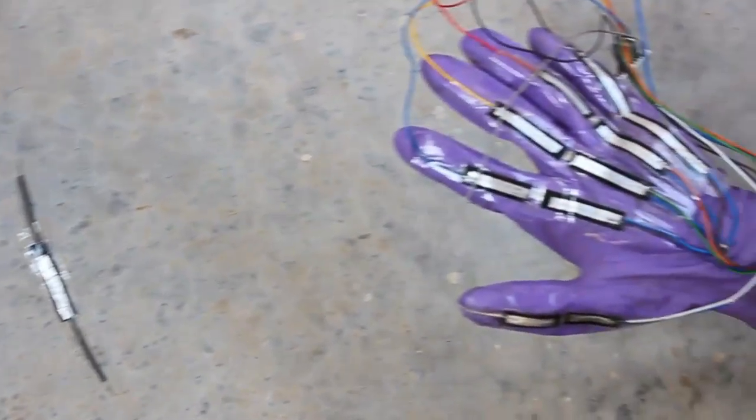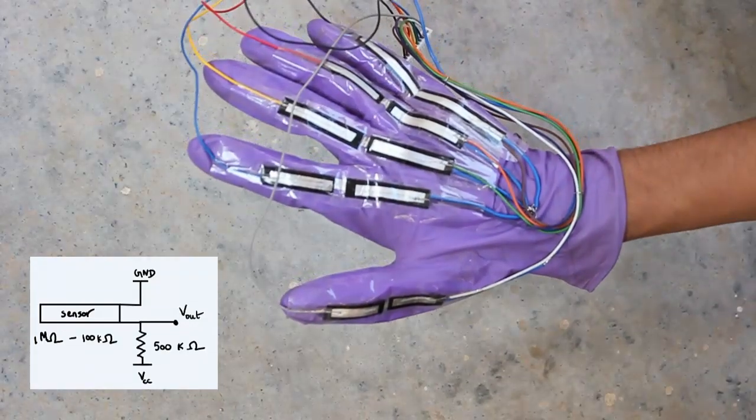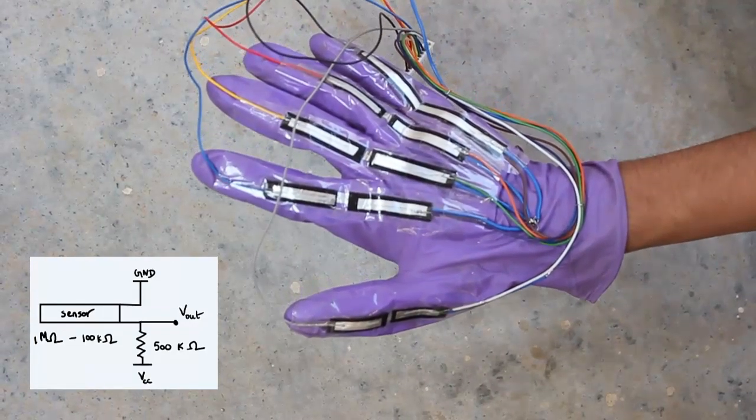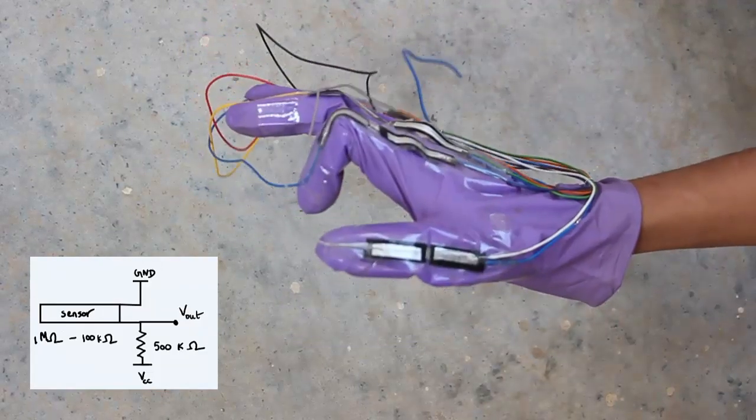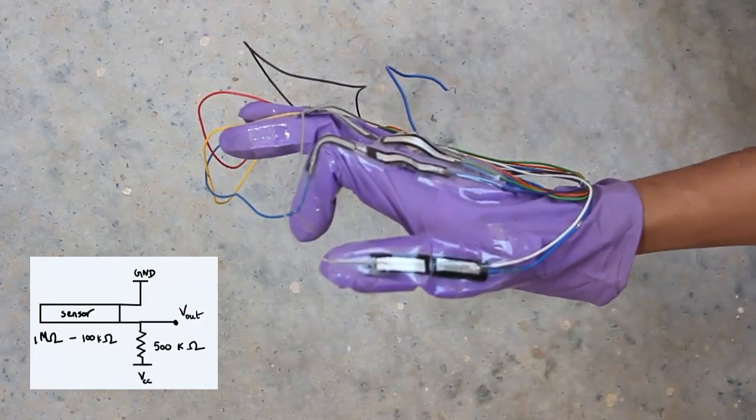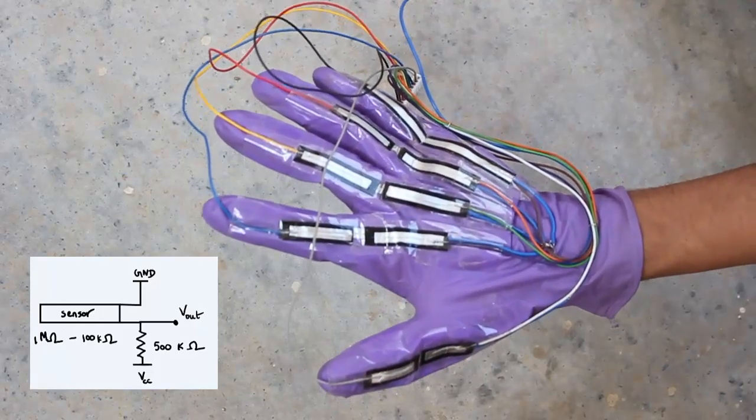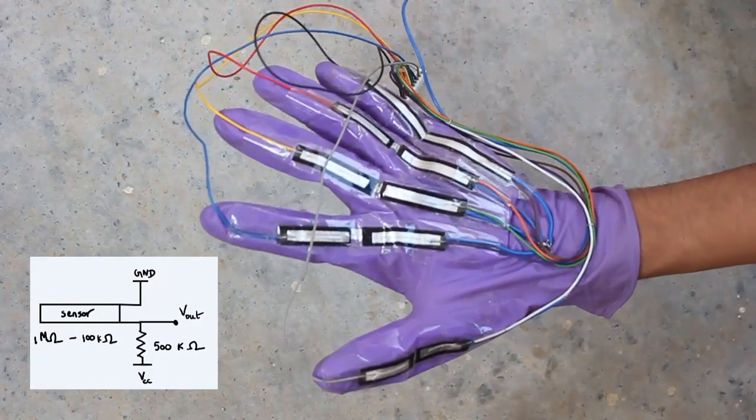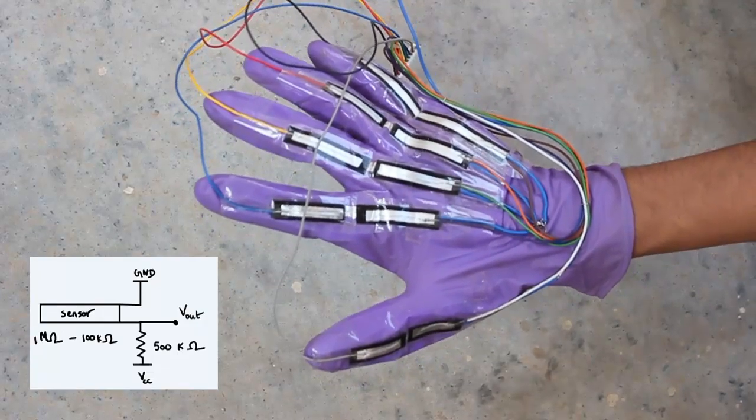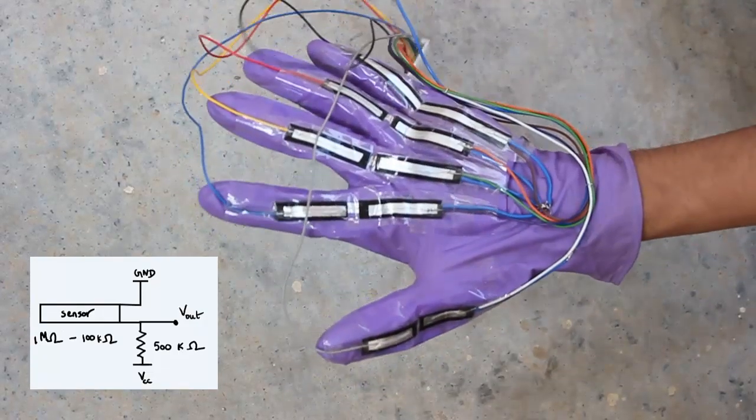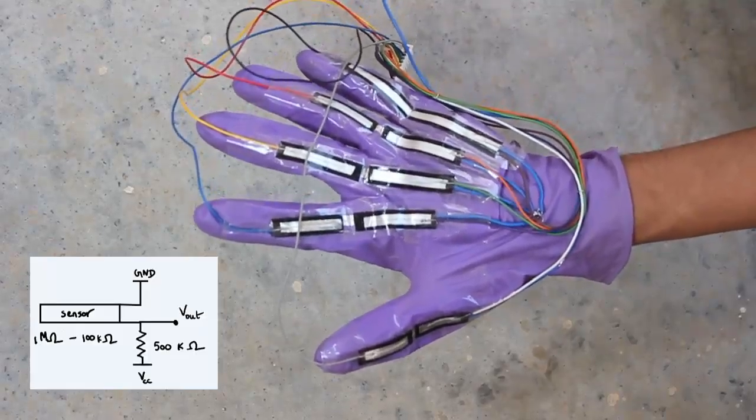The glove has 10 flex sensors, 2 on each finger. The sensors have a relaxed state resistance of more than 1 megaohm. The resistance changes to less than 100 kiloohms when the finger is fully bent. This is a change of more than 10 times. The sensors are configured so that the output voltage is high when the fingers are relaxed. The voltage goes low when the fingers are bent. This has been achieved by placing them in a voltage divider configuration along with series resistors of 500 kiloohms.